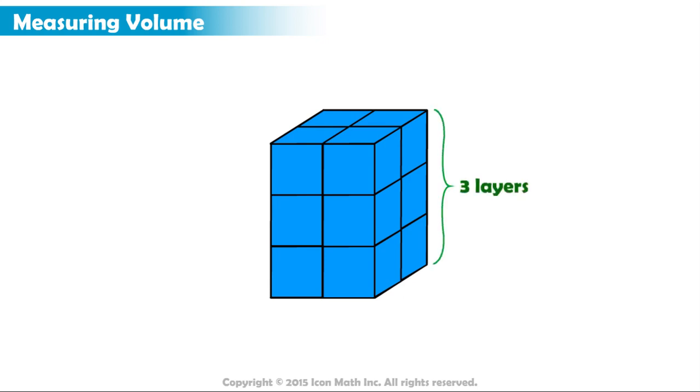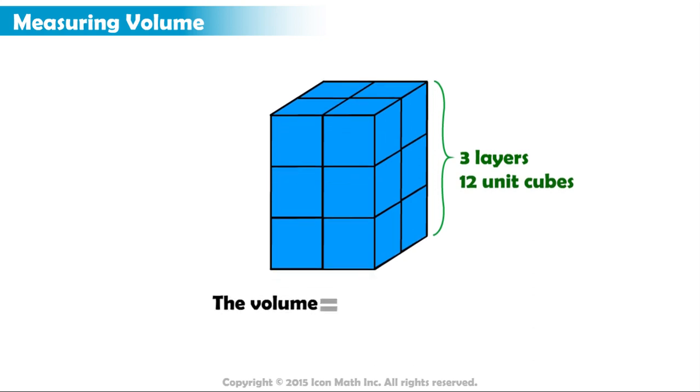There are three layers of unit cubes and four unit cubes in each layer. So there are a total of twelve unit cubes inside of this rectangular prism. Therefore, its volume is twelve cubic units, or twelve units cubed.